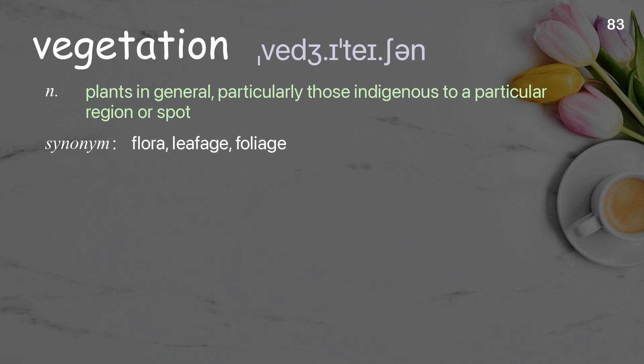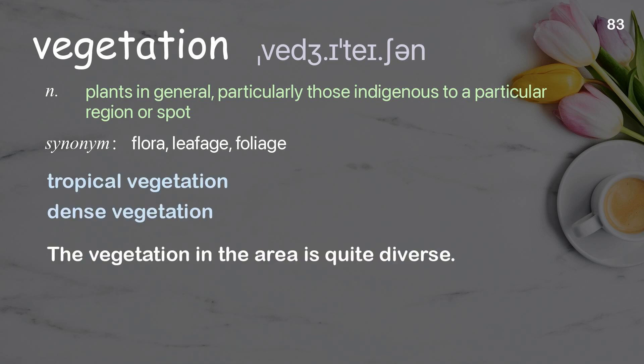Vegetation: plants in general, particularly those indigenous to a particular region or spot. Examples: tropical vegetation; dense vegetation. The vegetation in the area is quite diverse.